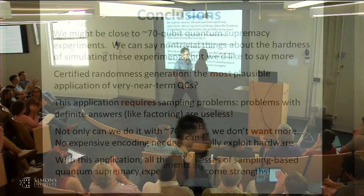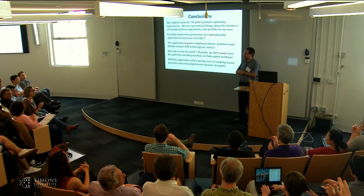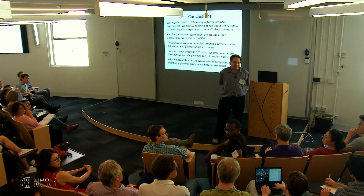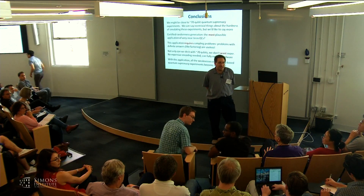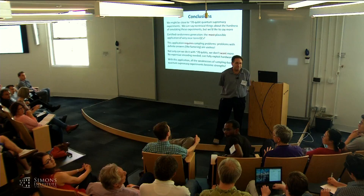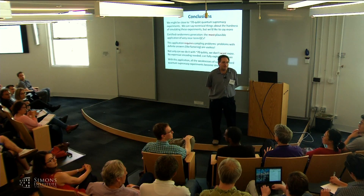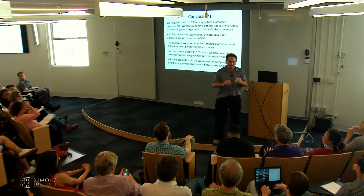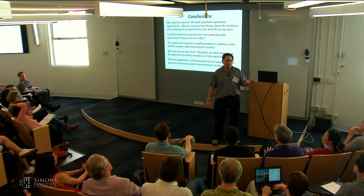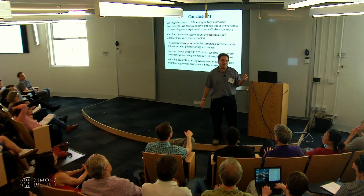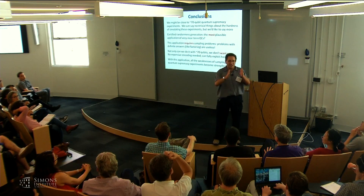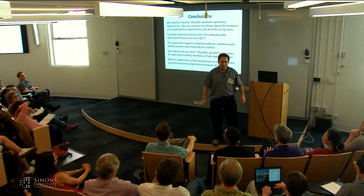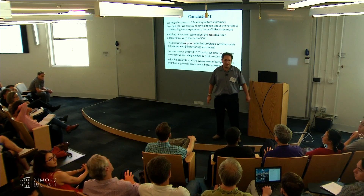In the random number generation scheme, the verification comes from seeing if a random selection of your outputs passes the HOG test. We use the seed for three purposes: to generate the challenges, to choose which challenges to verify, and as a seed for the randomness extractor. You need a small random seed to get started, but then the scheme gives you an exponential expansion in the number of random bits.